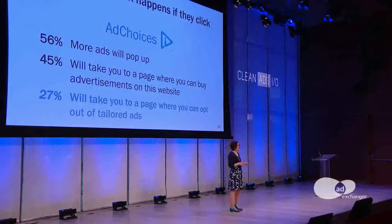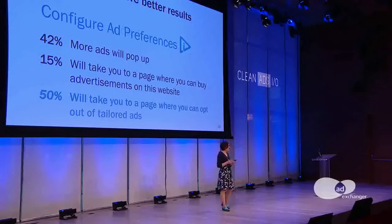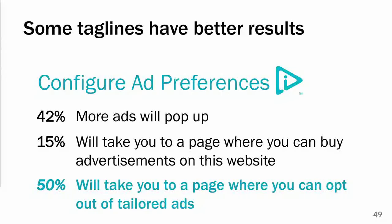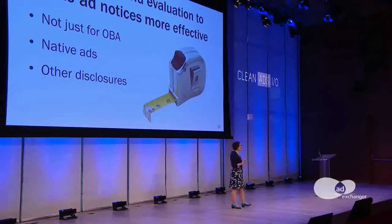When we tried some of the other taglines, we actually got very different results. For example, if you use 'configure ad preferences' — which takes up a lot more screen real estate but does communicate better — we reduced the number of people who thought more ads would pop up, reduced to 15% those who thought it was a place to buy ads, and got to 50% the people who had the correct answer. Can we do better? I hope so. What we need to do is try things and do some actual testing. In general, most of the tools out there have not been well tested with consumers and could really benefit and improve with testing.